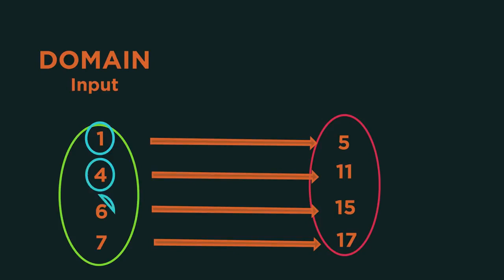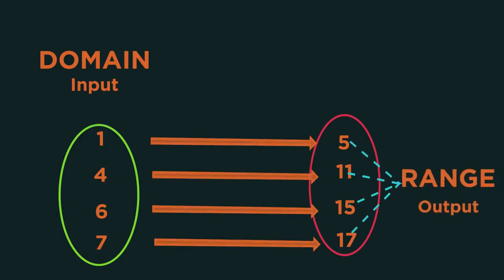So here it's 1, 4, 6, and 7. The range are the output values from the function. So what comes out when we put our domain values in?